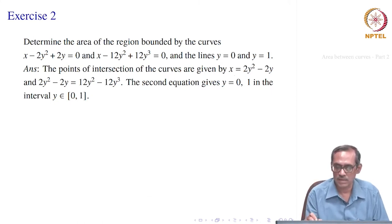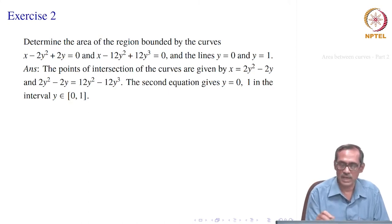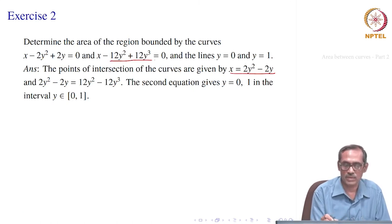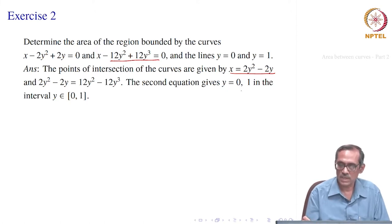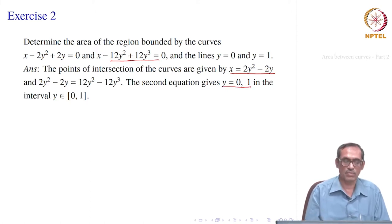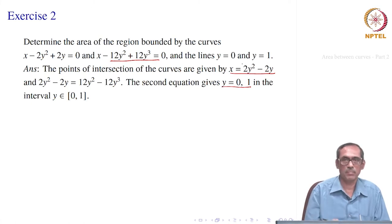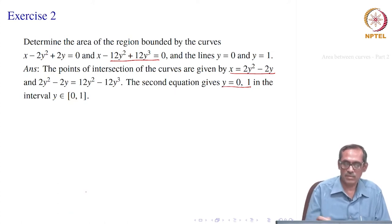So let us find the points of intersection of the curves. The first curve we can write as x equal to 2y squared minus 2y, and the second as x equal to 12y squared minus 12y cubed. Eliminating x, we get 2y squared minus 2y equal to 12y squared minus 12y cubed. Solving for y gives y equal to 0 or y equal to 1, which are the only solutions we need in the interval 0 to 1.